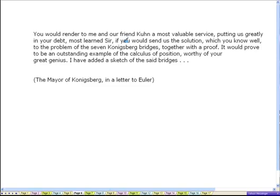You would render to me and our friend Kuhn the most valuable service, putting us greatly in your debt, most learned sir, if you could send us the solution which you know well to the problem of the seven Konigsberg bridges, together with the proof. It would prove to be an outstanding example of the calculus of position. Don't worry about what this means. Worthy of your great genius, I have added a sketch of the said bridges.